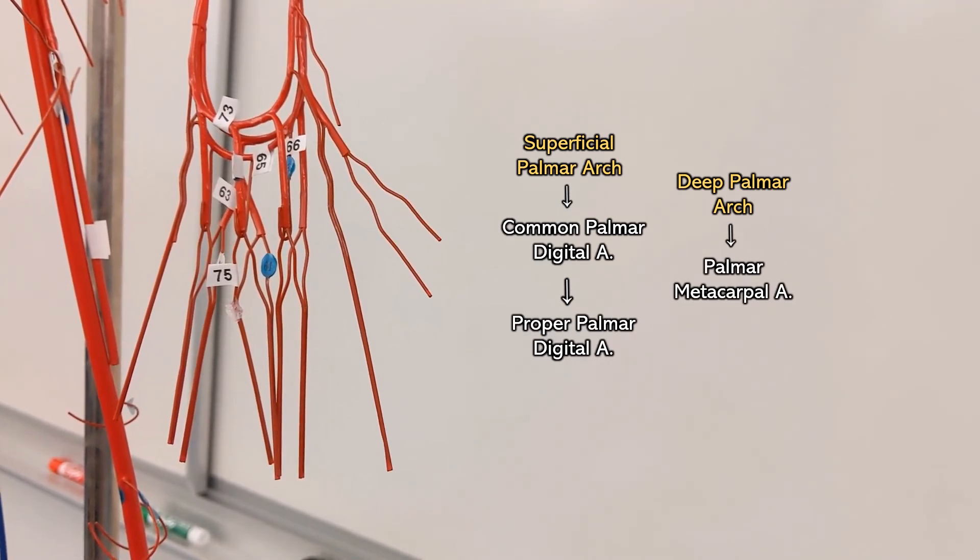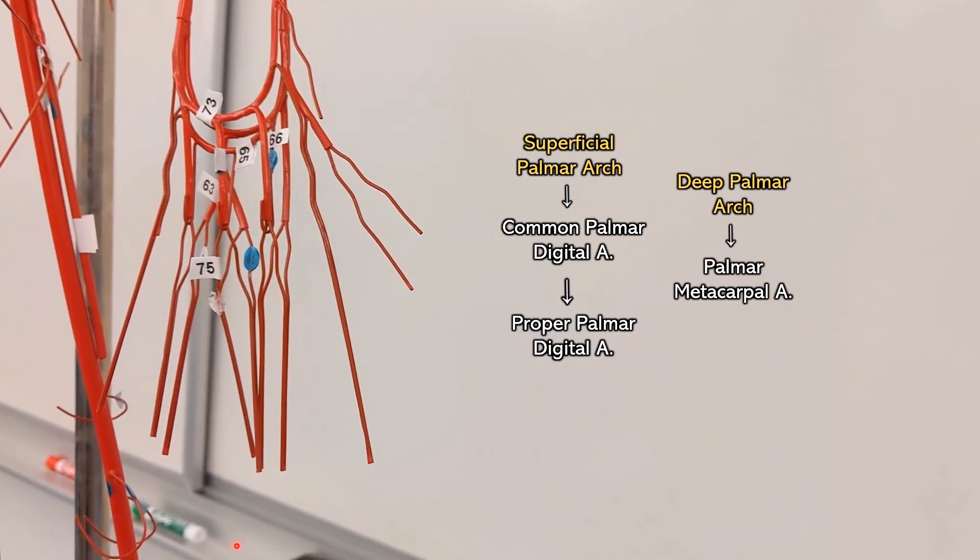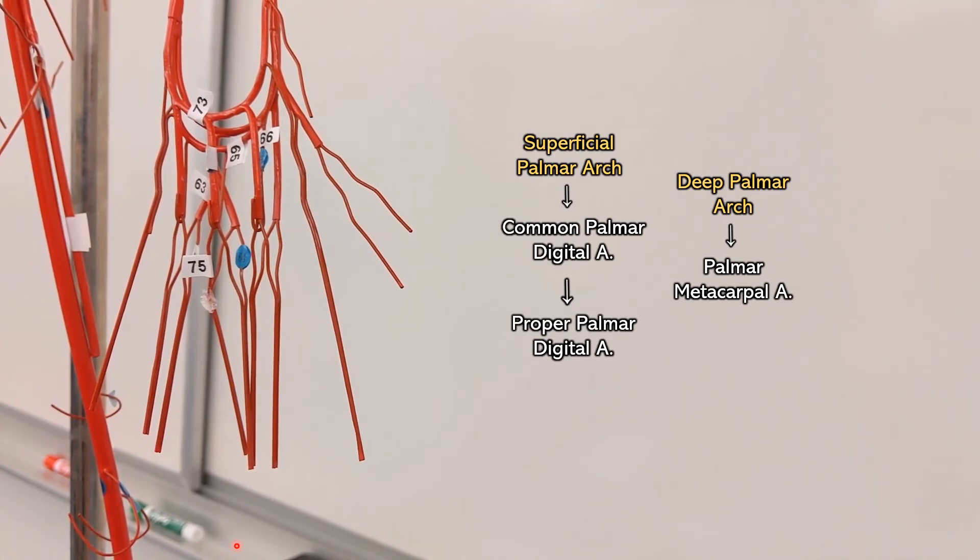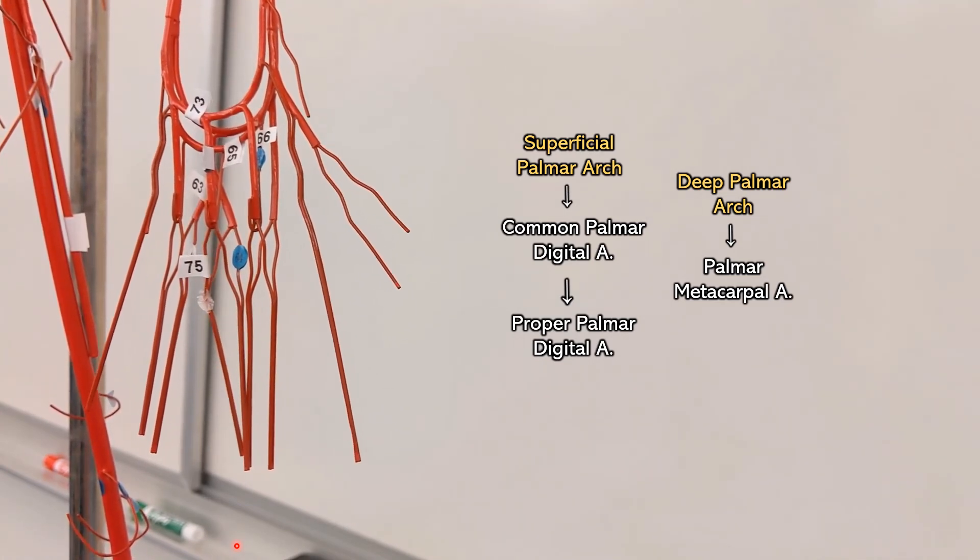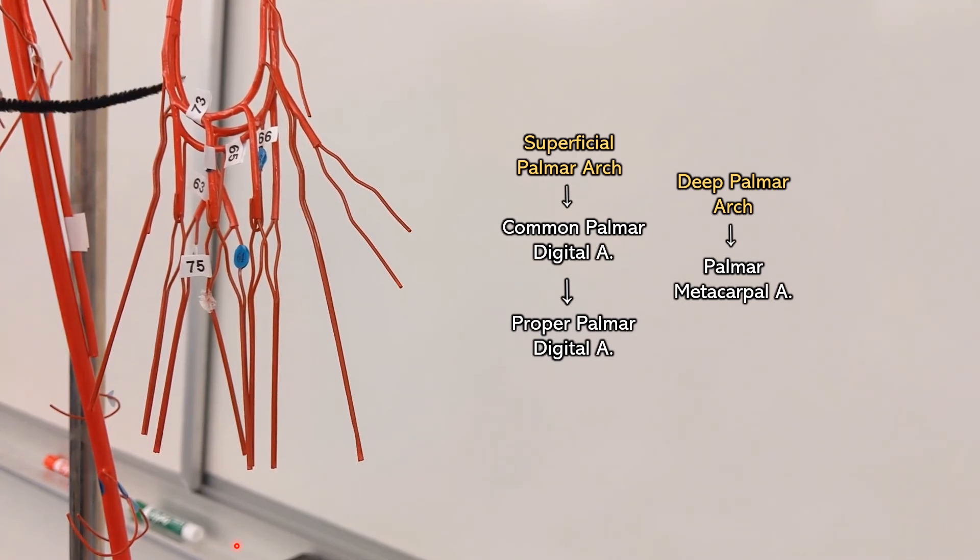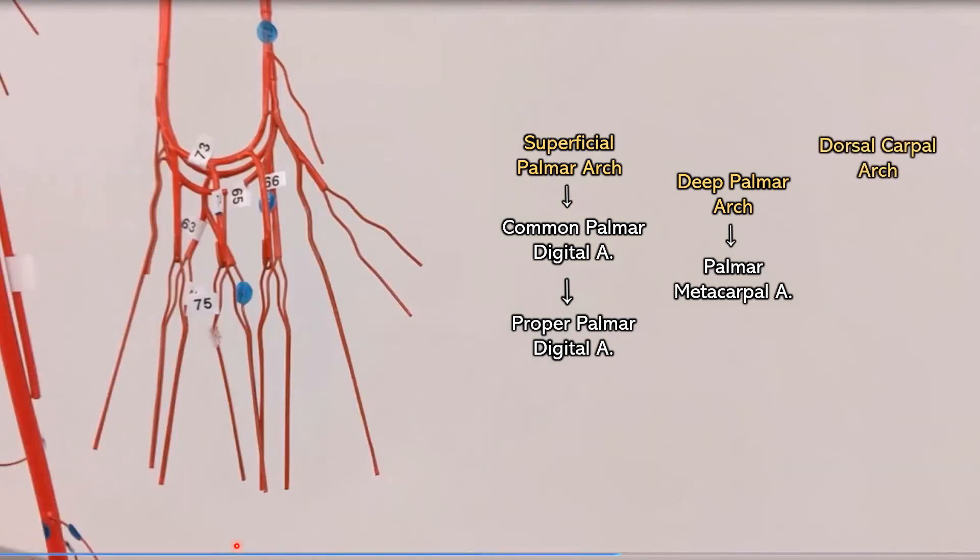Now the third arch, I don't think it's in our curriculum at our school, but I just think it's helpful to think that there are three arches and what comes off of each arch. The third arch all the way in the back is the dorsal carpal arch, and the branches coming off of that are the dorsal metacarpal arteries. Remember, the dorsal metacarpal arteries become dorsal digital arteries.